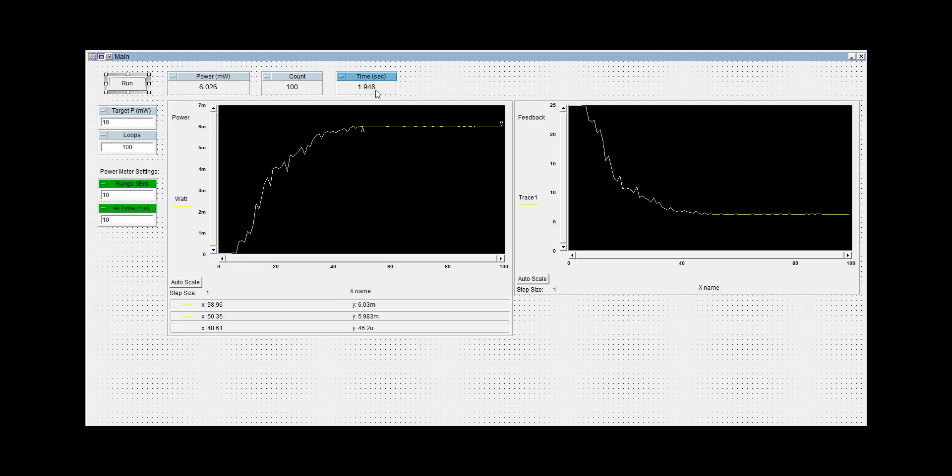And we can see it took about two seconds to run our 100 loops. We reached our value of about 6 milliwatts. It actually reached that at about half that time. The marker here is at 6 milliwatts. It's at the 51st, or I can move it to the 50th loop,